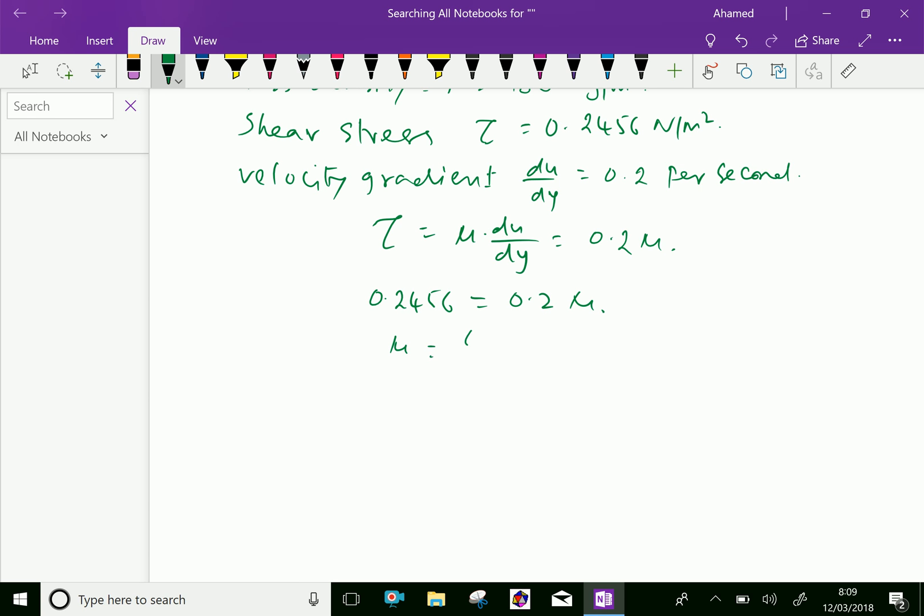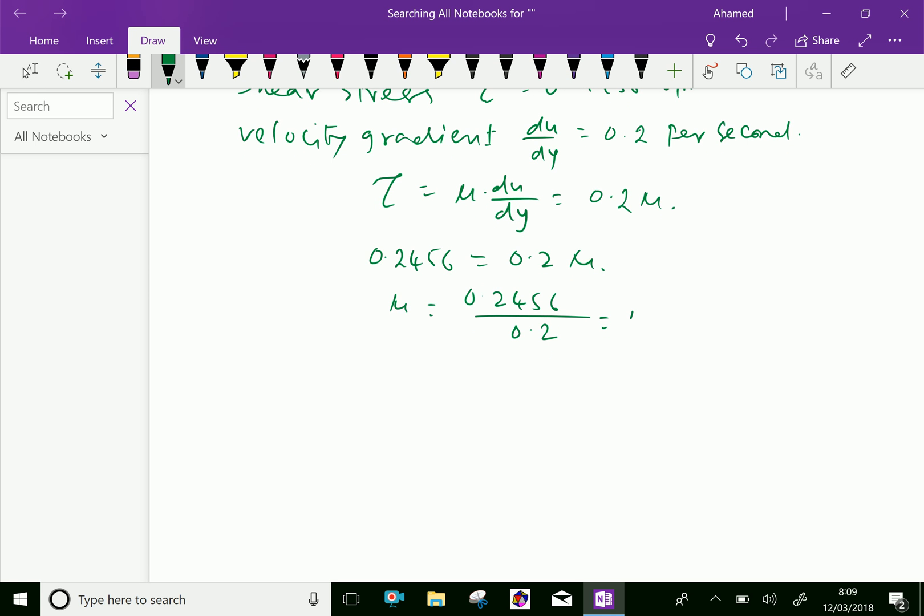Therefore, μ equals 0.2456 over 0.2. Let us calculate this: 0.2456 divided by 0.2 equals 1.228 Newton second per meter squared.